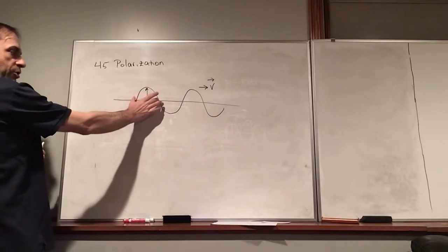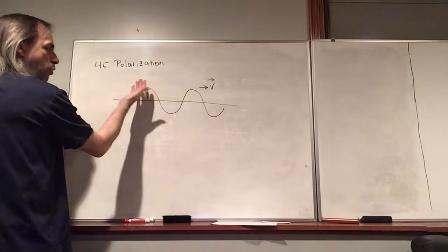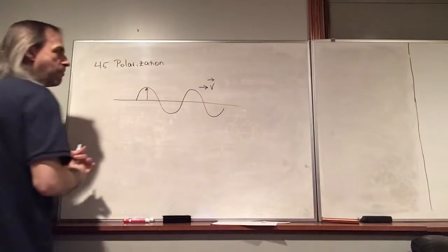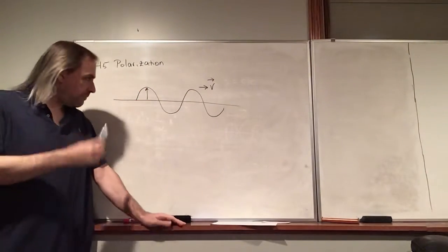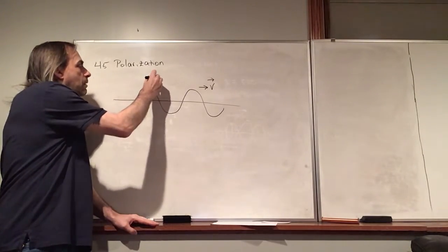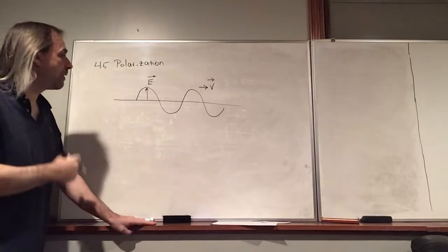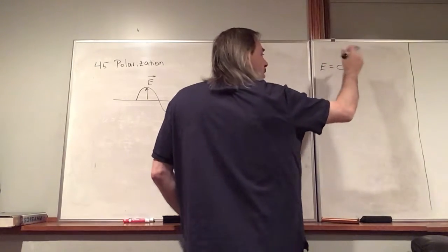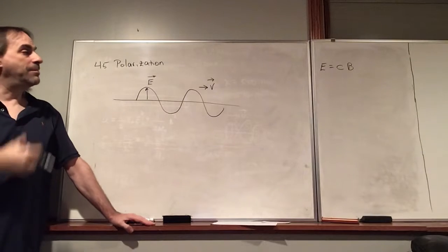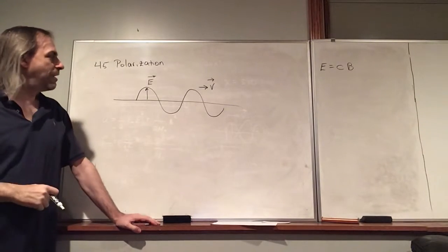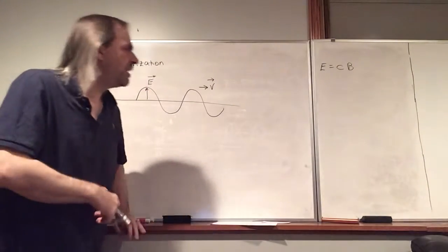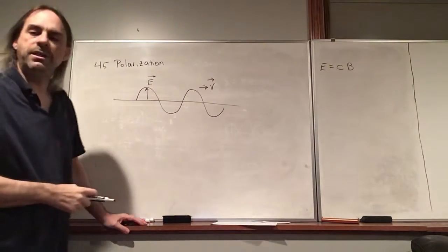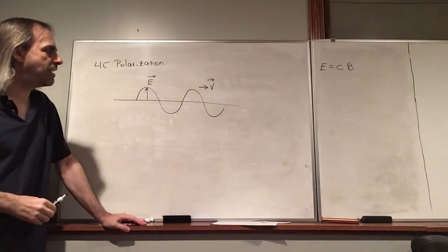So, for example, in this portion here, the wave would be coming out of the board. If you have your fingers in the direction of the electric field, curl towards the magnetic field, the thumb points in the direction of the velocity. We also have a relation between the magnitudes of the electric and magnetic fields, where the electric field equals the speed of light times the magnetic field.